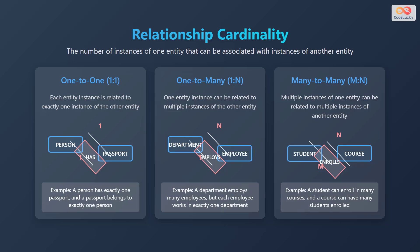Consider person has passport, department employs employee, and student enrolls course as examples for one-to-one, one-to-many, and many-to-many relationships respectively.